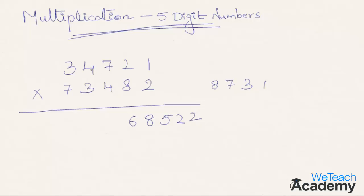Step six: 8 into 3 is 24, plus 7 into 2 is 14; 24 plus 14 is 38, plus 4 into 4 is 16; 38 plus 16 is 54, plus 7 into 3 is 21; giving 75, plus 8 carried forward gives 83. Write 3, carry 8. Step seven: 4 into 3 is 12, plus 7 into 7 is 49; 12 plus 49 is 61, plus 4 into 3 is 12; 61 plus 12 is 73, plus 8 carried forward gives 81. Write 1, carry 8.